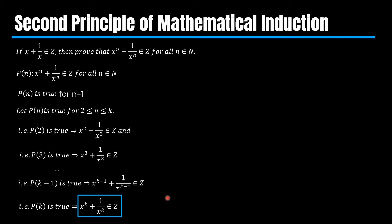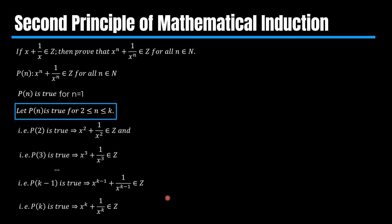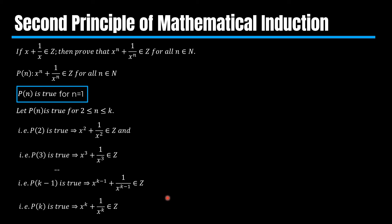In the first principle it is assumed that P(n) is true for n equal to k, but in the second principle it is assumed that P(n) is true for all n greater than the basis number and less than or equal to an integer k. In this case the basis number is 1, because the statement is true for n equal to 1 initially.